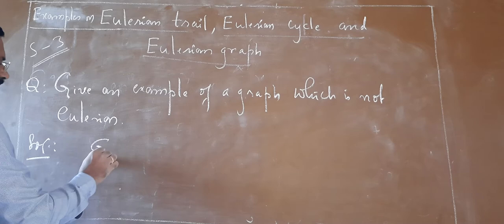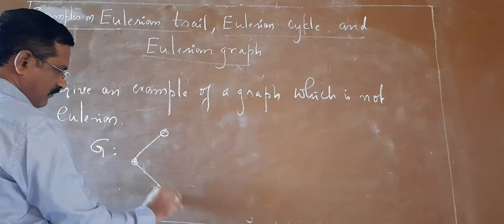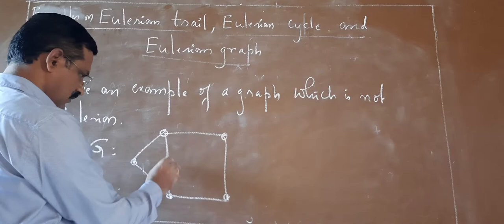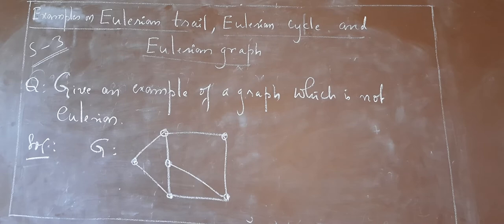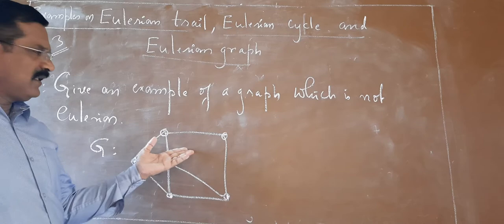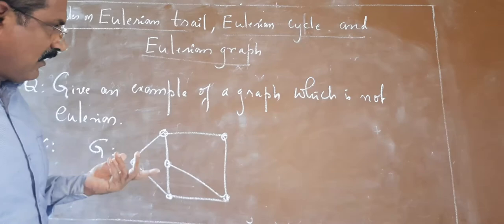Let me draw one graph. So this is the graph I am going to consider. If it contains an Eulerian cycle, then it is an Eulerian graph. If it doesn't contain any Eulerian cycle, then it is not an Eulerian graph.